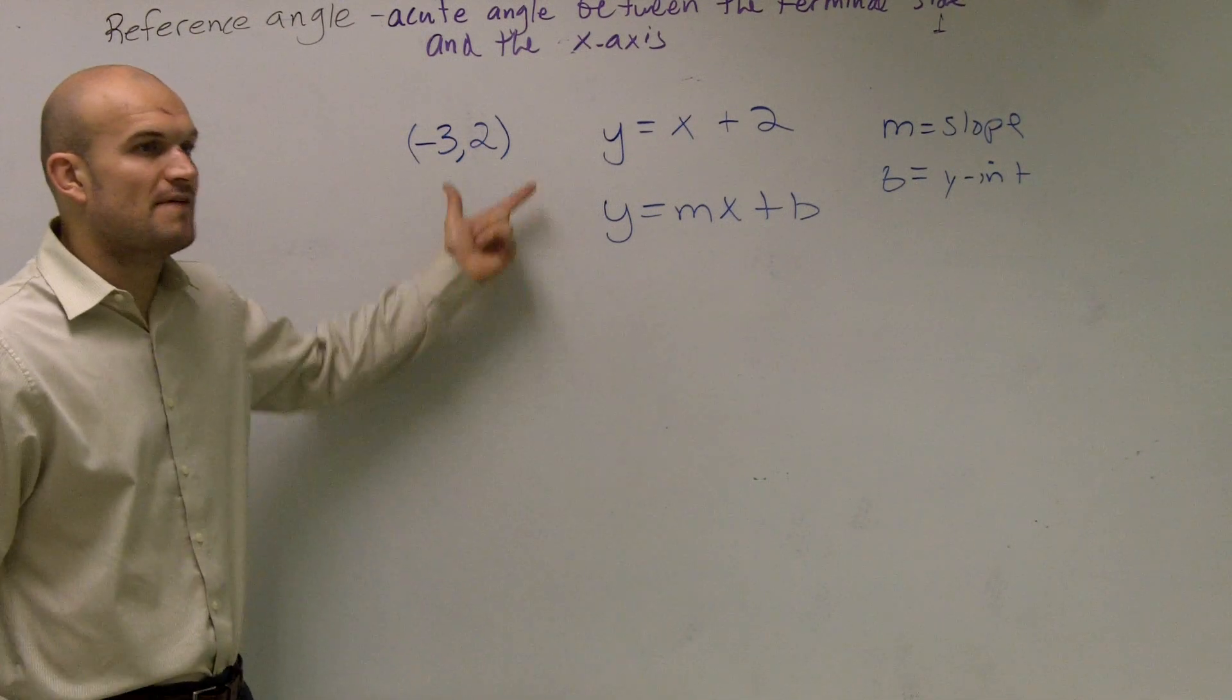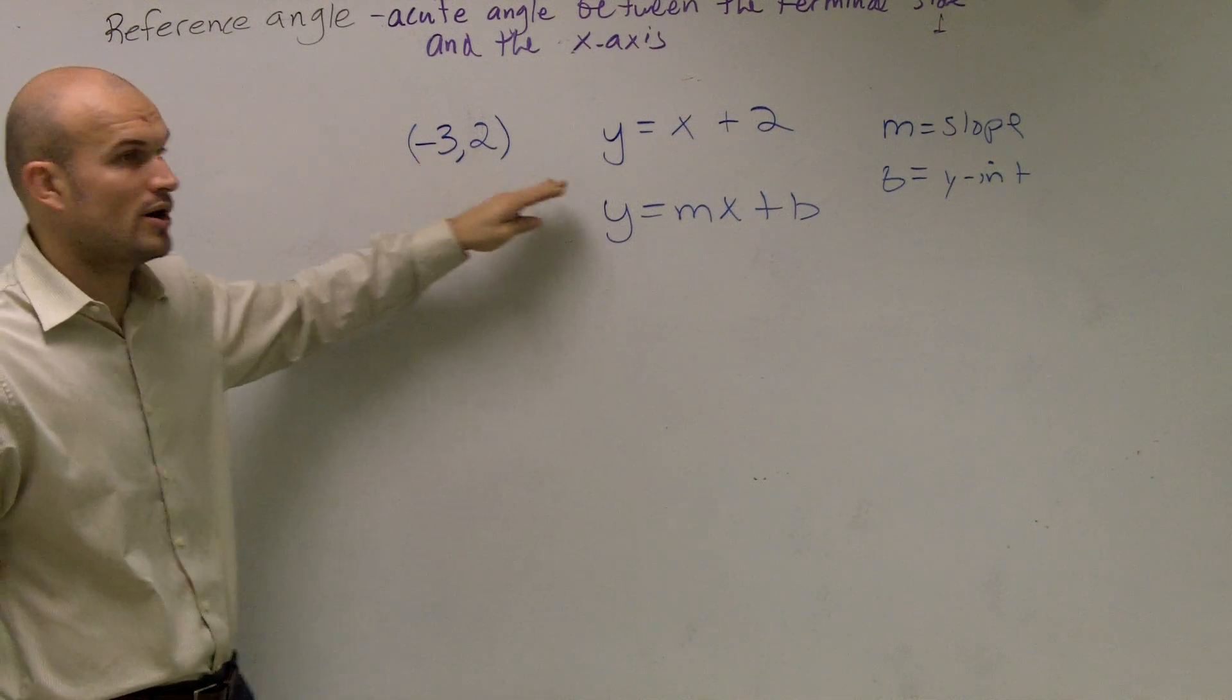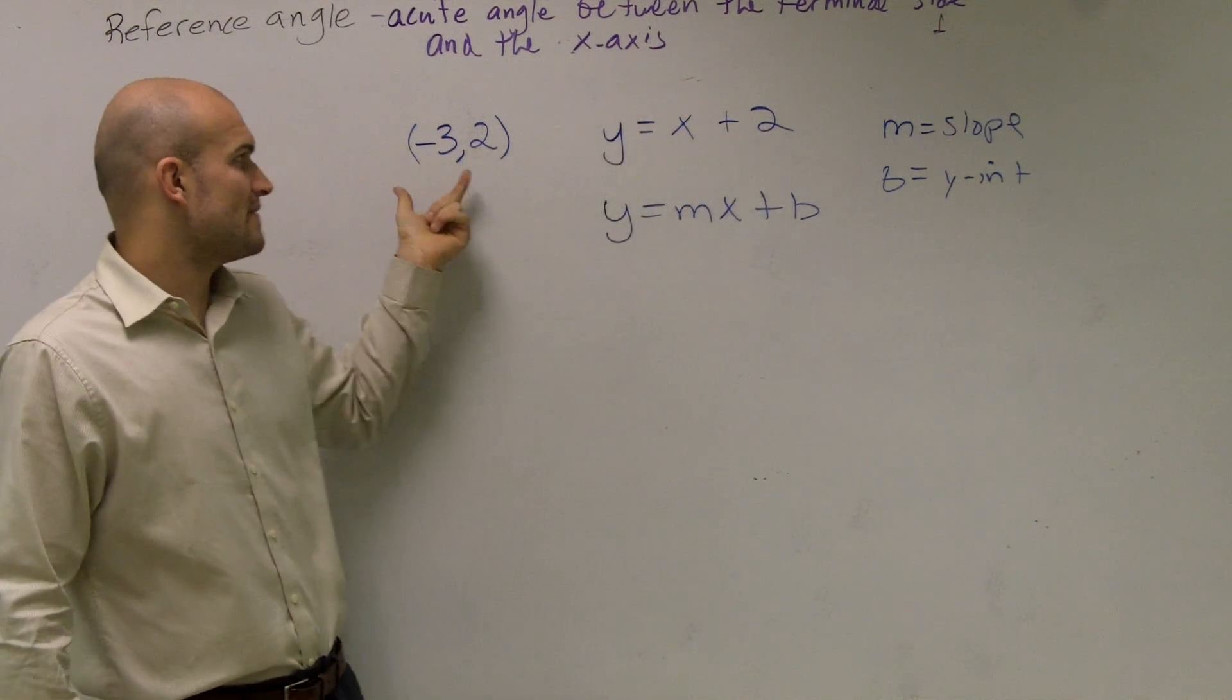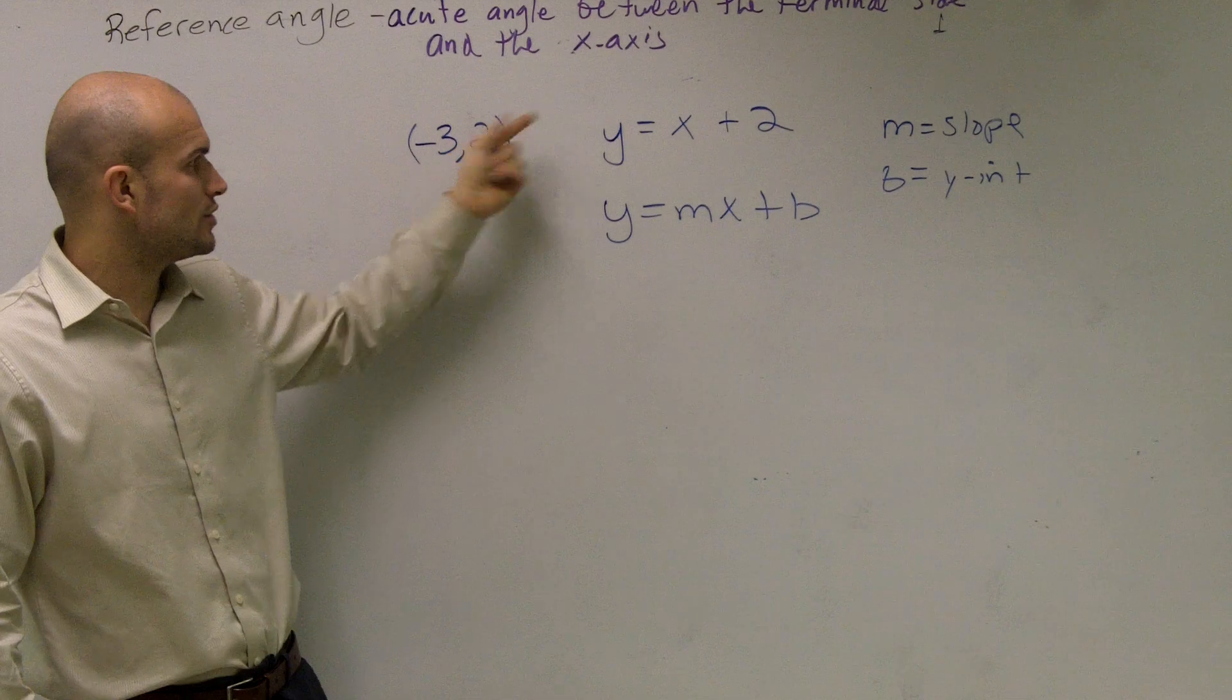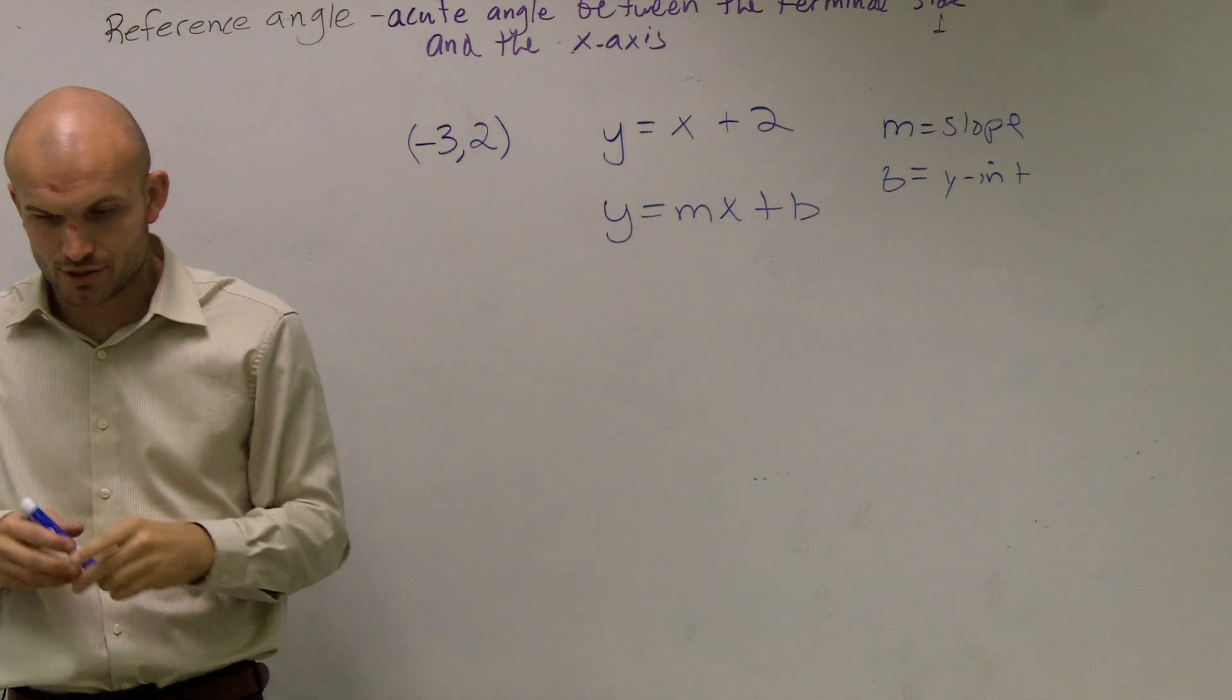Now, the next thing is it says find a perpendicular line that goes through this point. Find a line that goes through negative three, two, that is perpendicular to y equals x plus two.